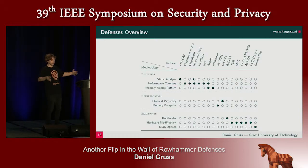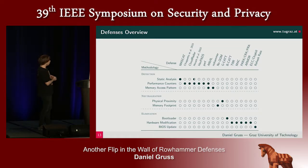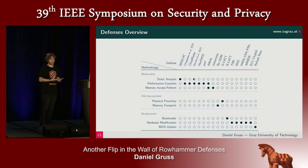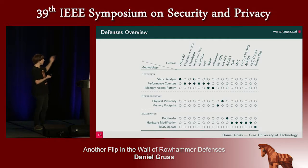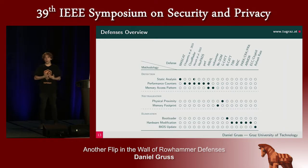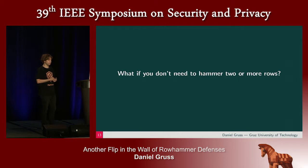If we put all of that together in a table, we see that we have a lot of defenses that use performance counters, a lot of hardware modifications — which most are not applied yet on current systems — and a few others: static analyzers, physical proximity, memory footprint. So the memory access pattern also plays a role. One of the core questions when we started was: do you actually have to hammer multiple memory locations? And that brought us to one-location hammering.